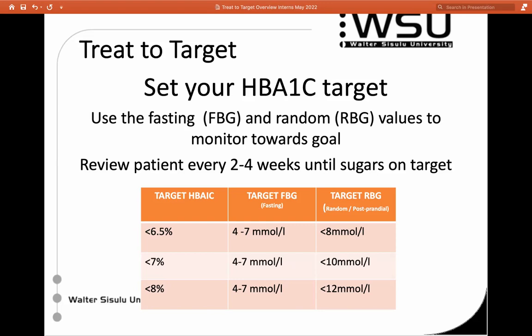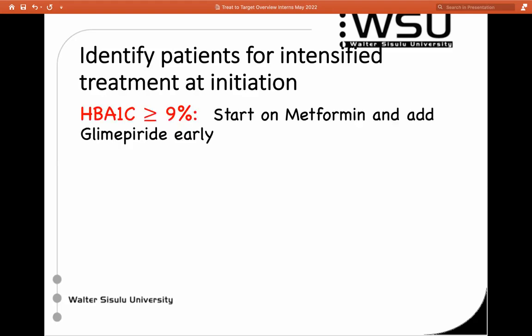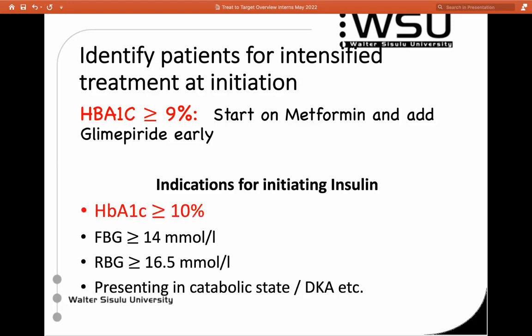Before looking at stepwise treatment, a couple of caveats. You'll need a baseline HbA1c, because it tells you how far down the line your patient is. If the HbA1c is over 9%, you can basically assume they're going to need two drugs and need them quickly — so you'll be aggressive getting them to the maximum dose of metformin and introducing glimepiride. There are definite indications for considering starting insulin right at the very beginning; it doesn't necessarily mean the patient will be on insulin for life — you might use insulin to get them on target, then reduce and even get them off insulin and control on orals.